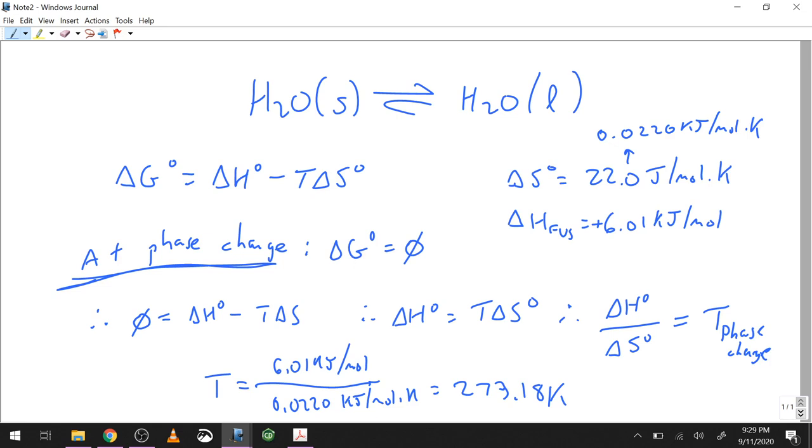All right. So the question of spontaneity though is different. Same equation: ΔG° = ΔH° - TΔS°. And I had my delta H which was 6.01 kilojoules per mole. My delta S is 0.0220 joules per mole kelvin. What we just did was 273. That tells me the phase change.